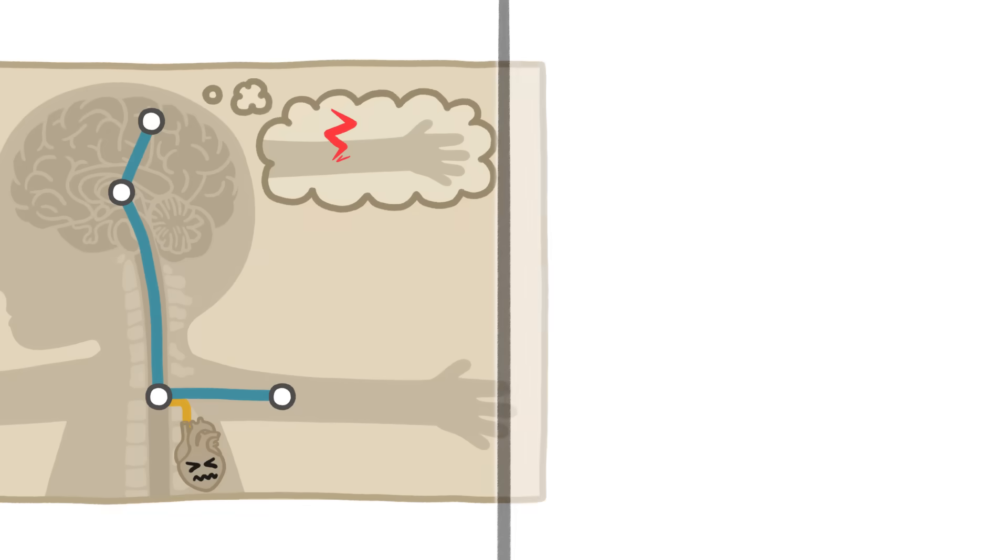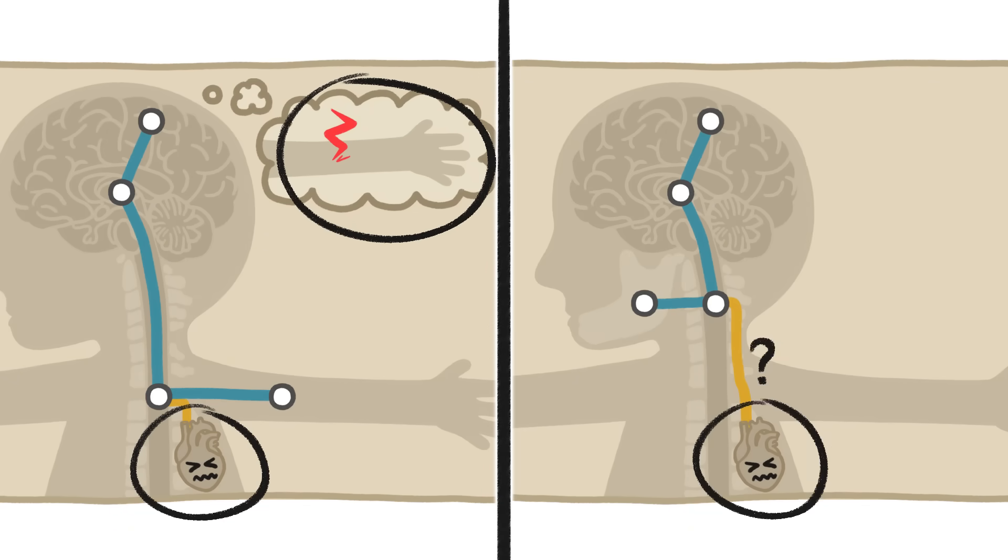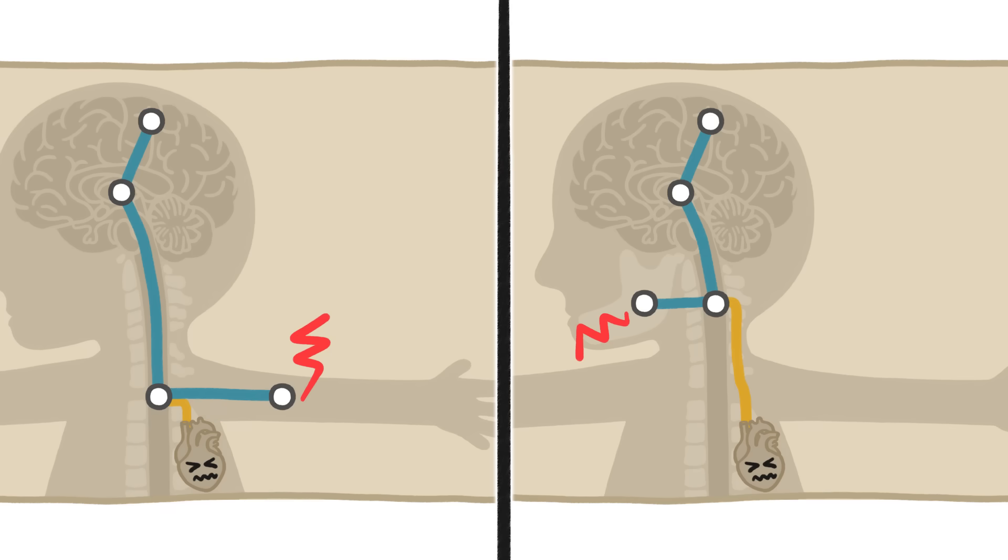Usually, at least. Scientists don't really understand why, but some brains interpret heart pain as coming from the arm, while others interpret it as coming from the jaw. The pain is real, but the brain just doesn't have a good way of knowing exactly where it came from.